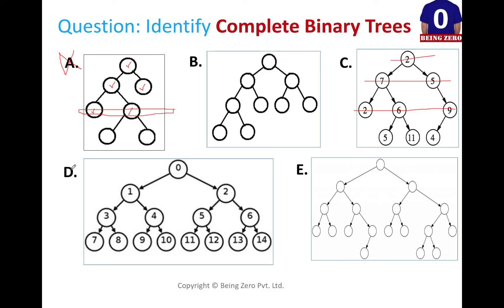Let's move on to D and see whether D is a complete binary tree. Zero has two children, one has two children, two has two children, three has two children, four, five, six — all of them have two children each, and the last level is also completely filled. Make a judgment whether this is a complete binary tree or not.